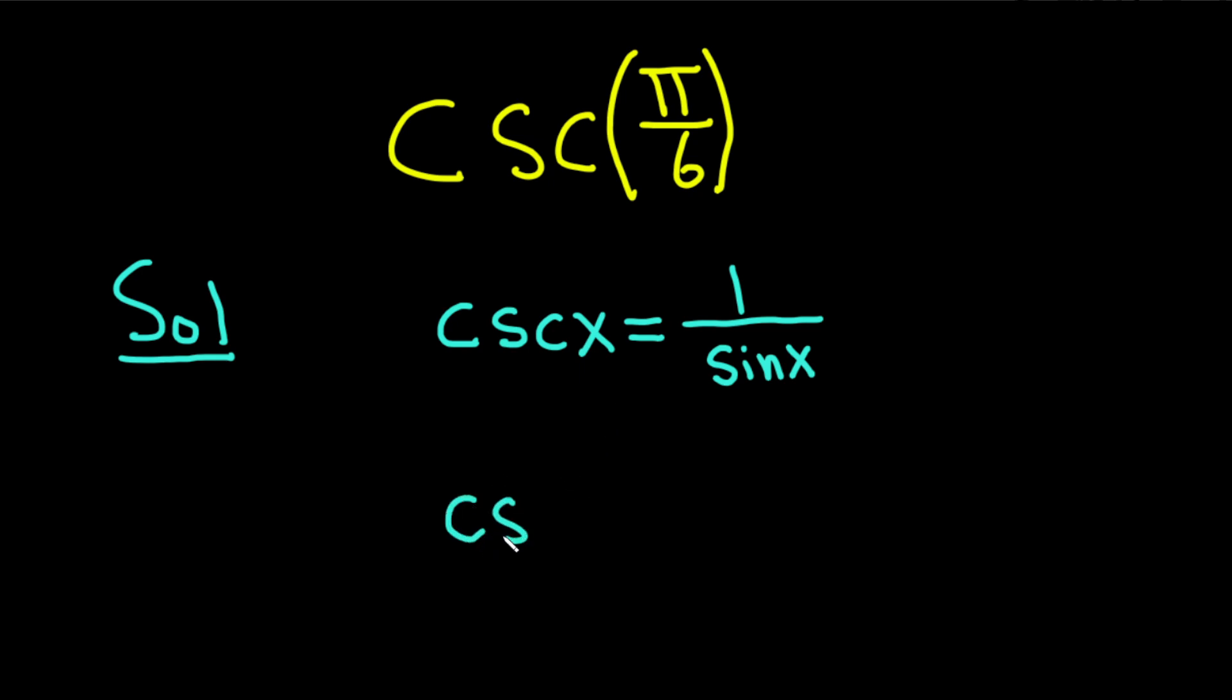So this is the cosecant of pi over 6, and this is equal to 1 over the sine of pi over 6. Again, all we've done is replace every copy of x with pi over 6.